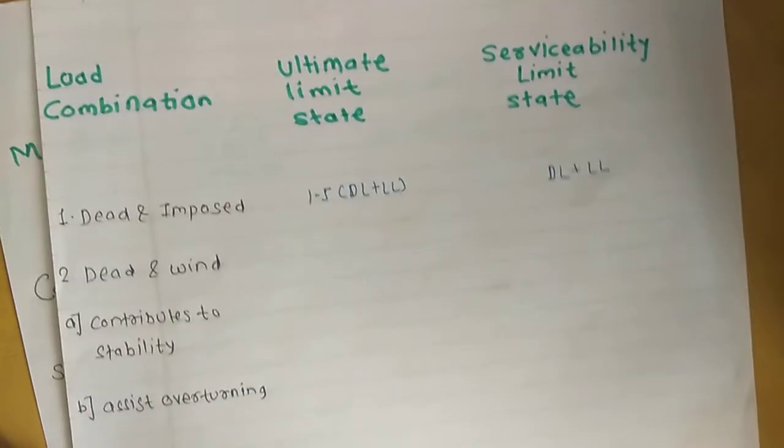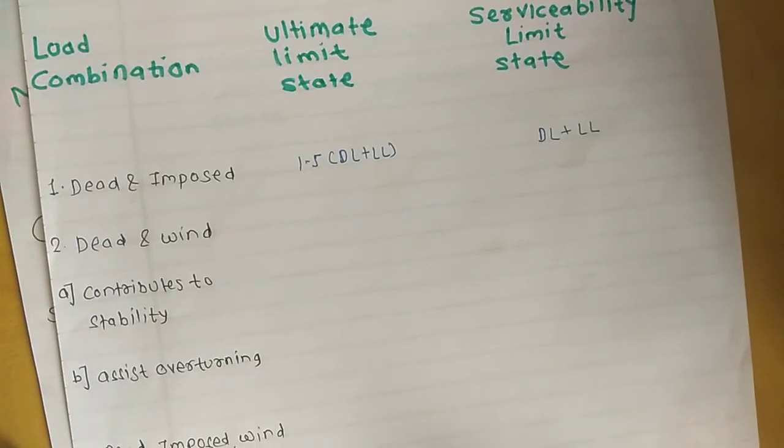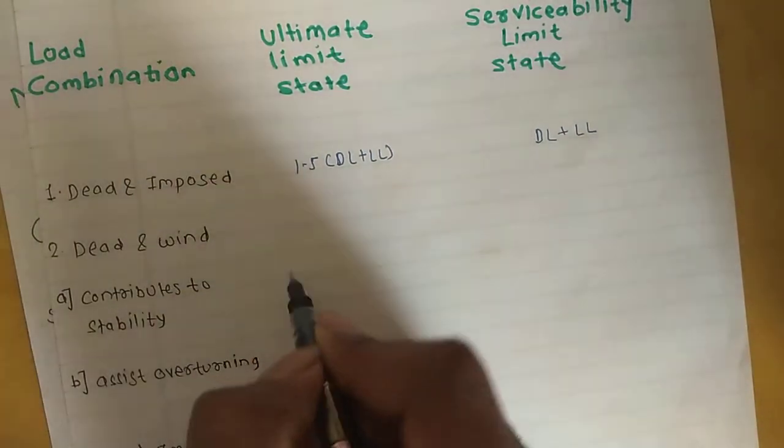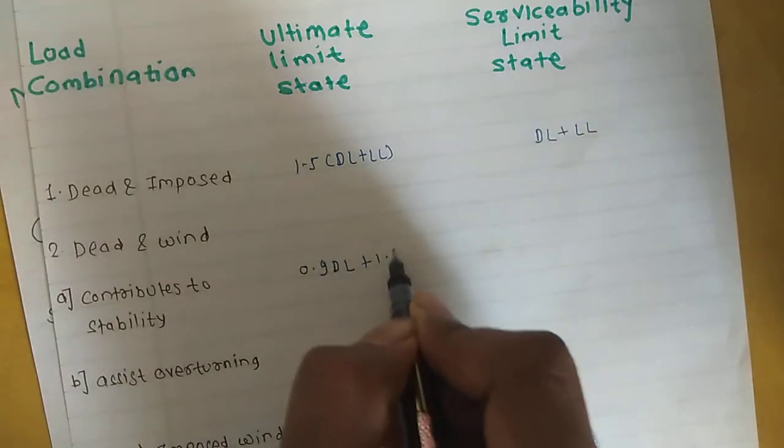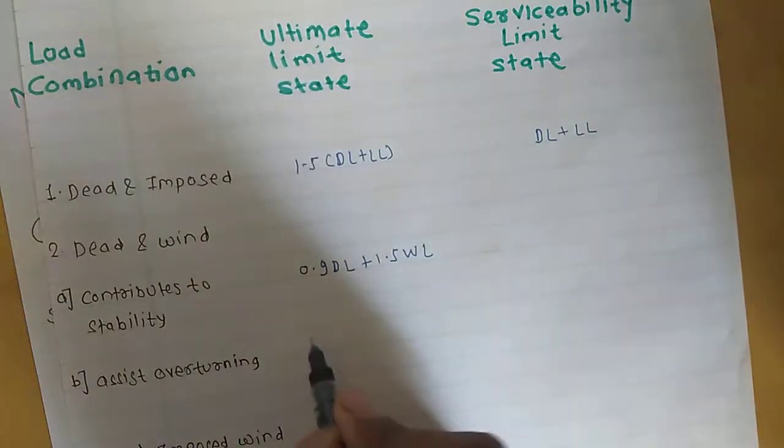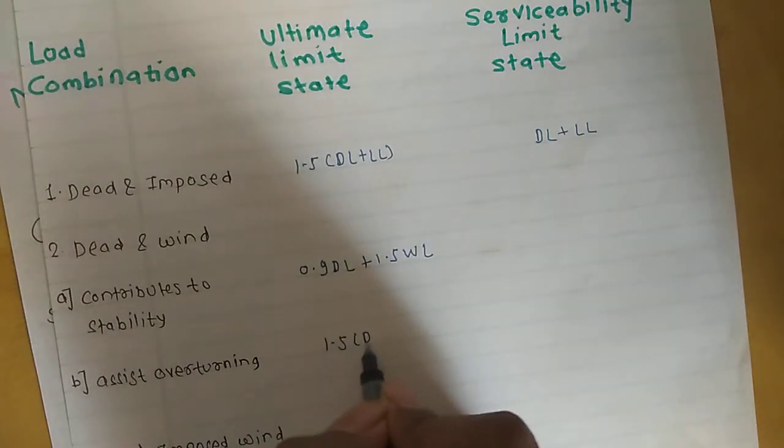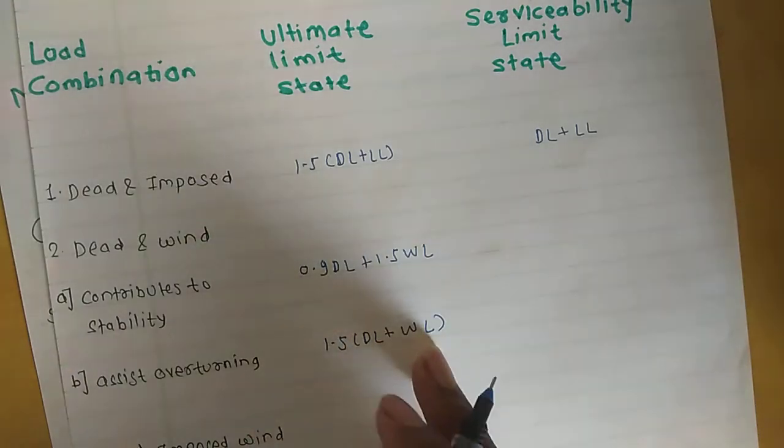For dead and wind loads, there are two factors: contributes to stability and assists overturning. For stability, it is 0.9 dead load plus 1.5 wind load. For overturning, it is 1.5 dead load plus 1.5 wind load.